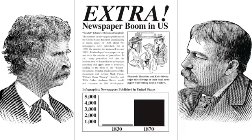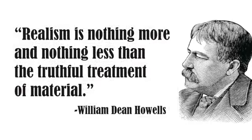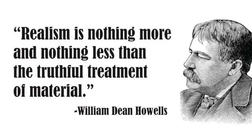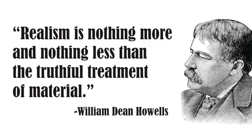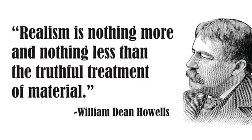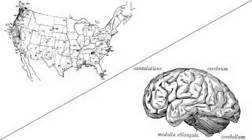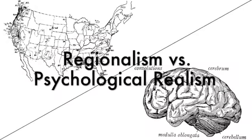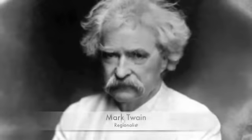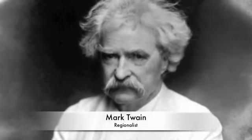Writers like Mark Twain and William Dean Howells adapted the tenets of journalism to fiction. While Howells offered a fairly straightforward definition of the movement by noting that realism is nothing more and nothing less than the truthful treatment of material, not all realists agreed on the best way to treat material truthfully.